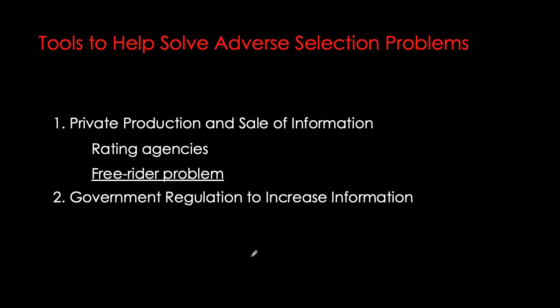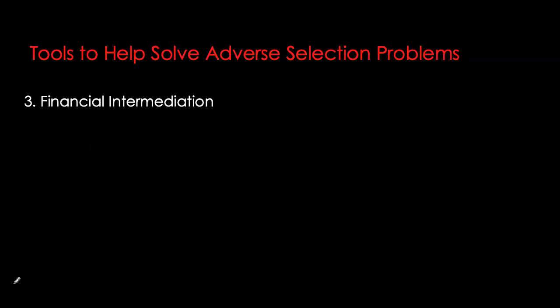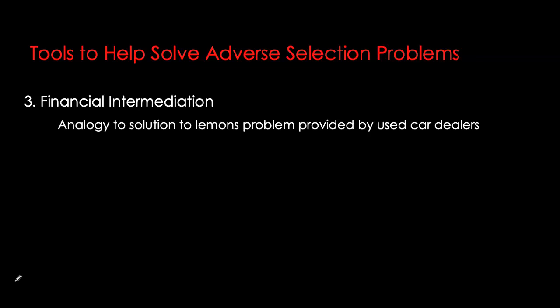Governments must come in and bridge this information gap. Governments can provide information for free; however, that can be very politically difficult, especially when information about bad firms is released. Therefore we see a huge role for regulation — governments can regulate securities markets in ways that encourage firms to reveal information about themselves. Thirdly, we can use financial intermediation to solve the problem of adverse selection.